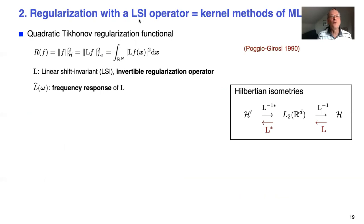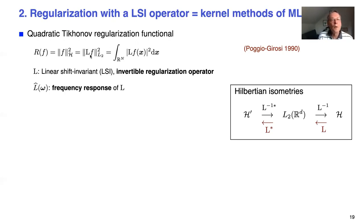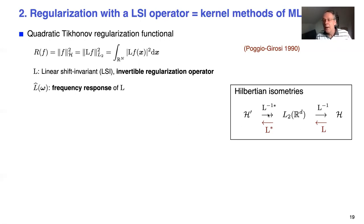In practice, people prefer regularization with a linear shift-invariant operator, which relates to kernel methods in machine learning, like the Tikhonov-type regularization used by Poggio and Girosi. In this case, the norm involves an operator and the L2 norm. The assumption is that L is linear and shift-invariant — a convolutional operator — and also invertible. We can then characterize it by its frequency response.